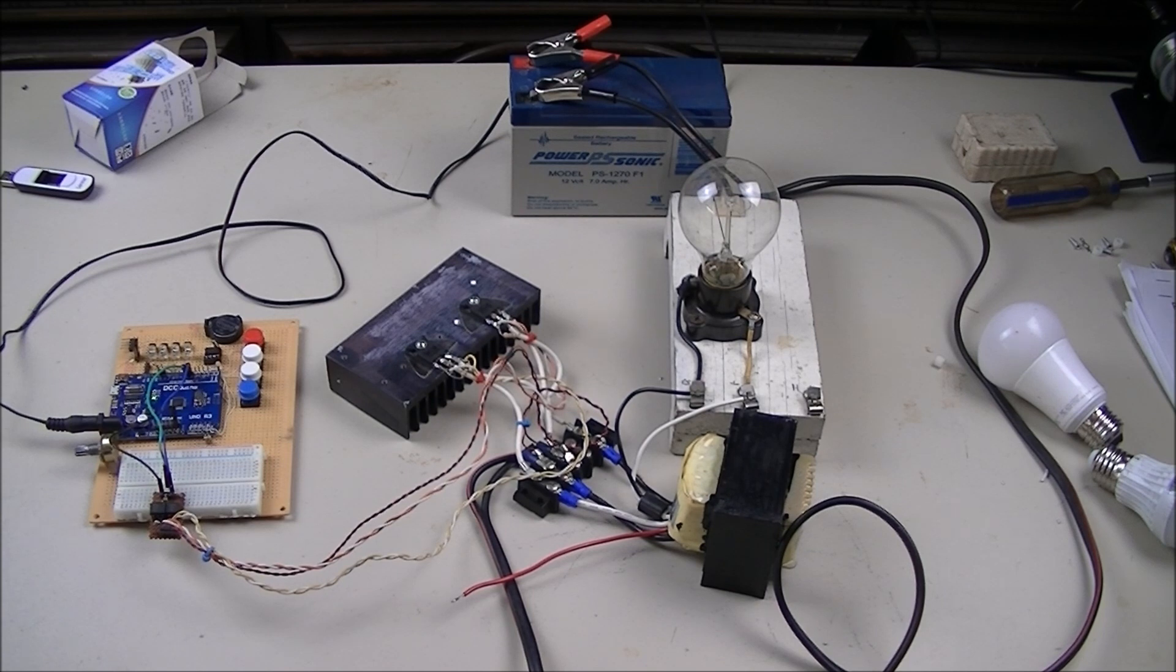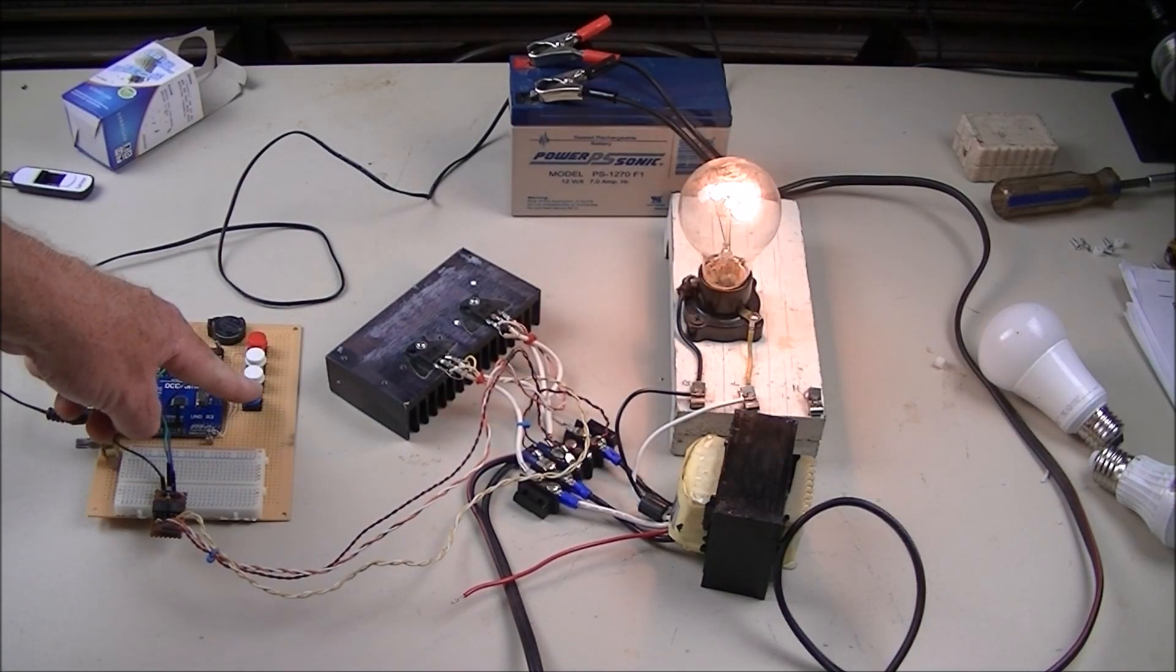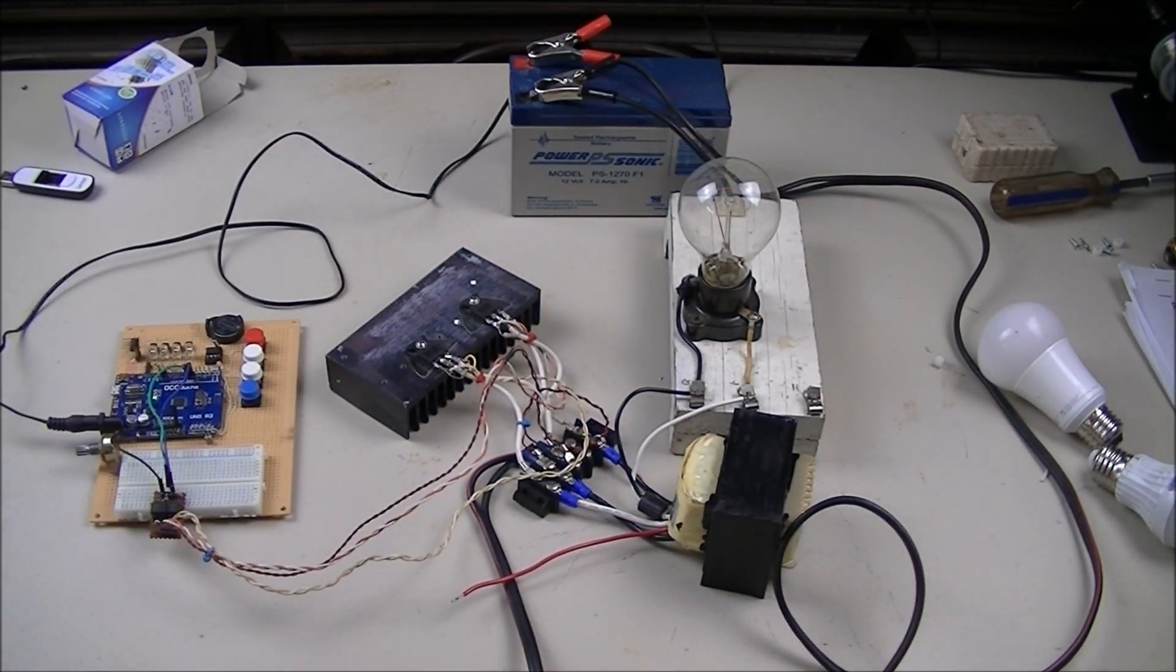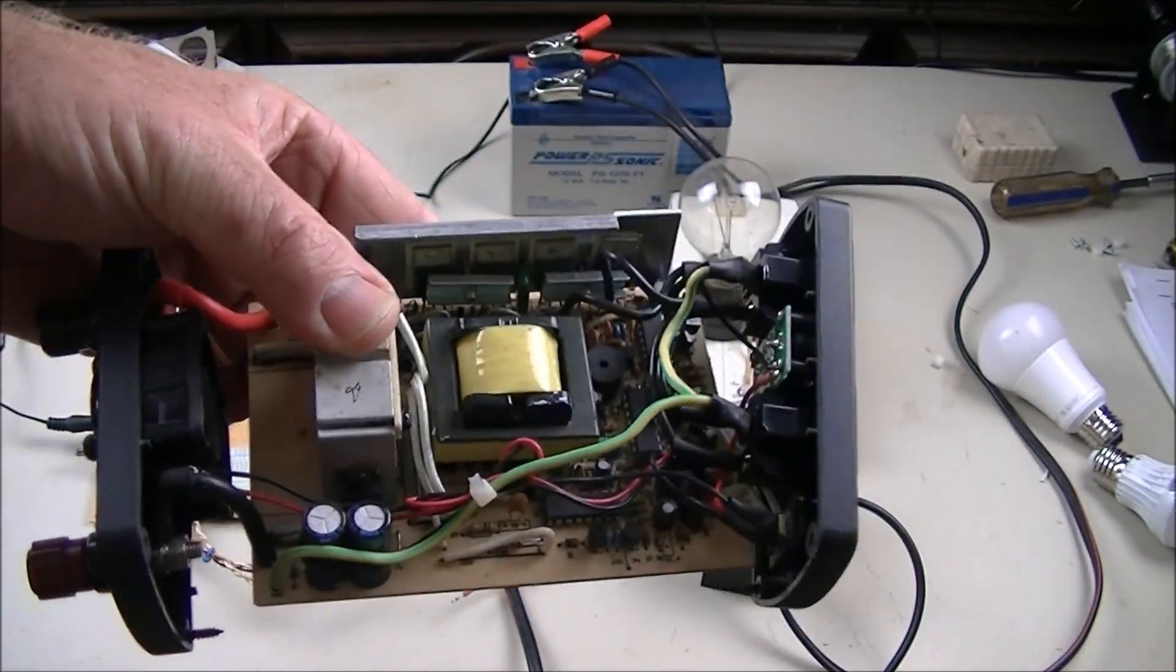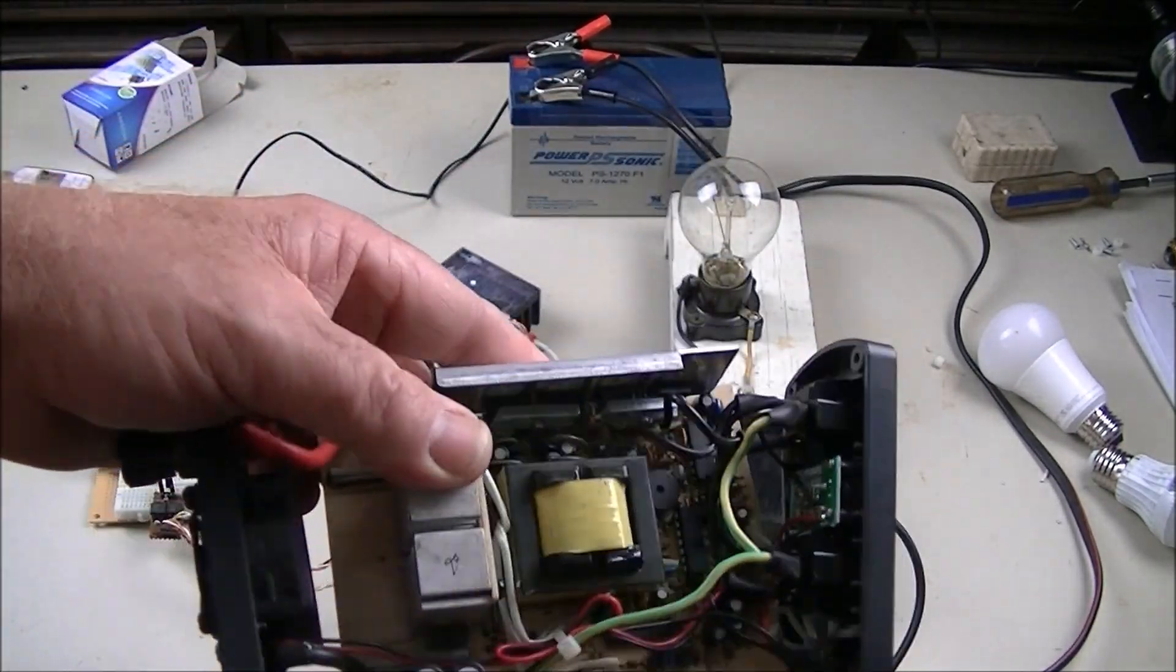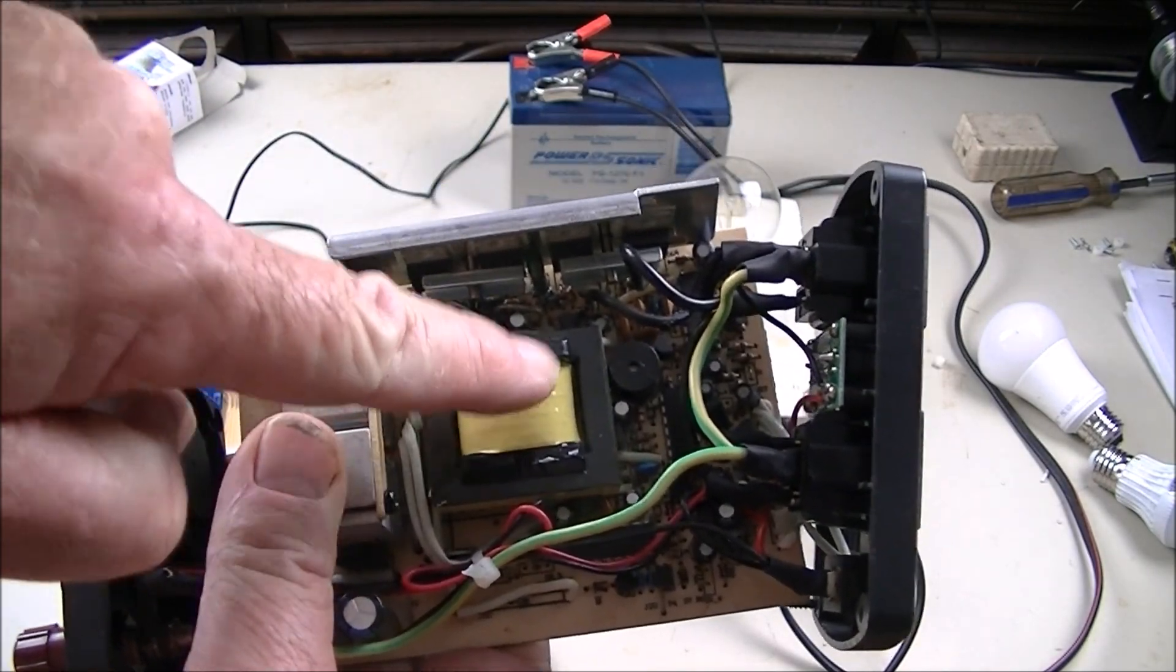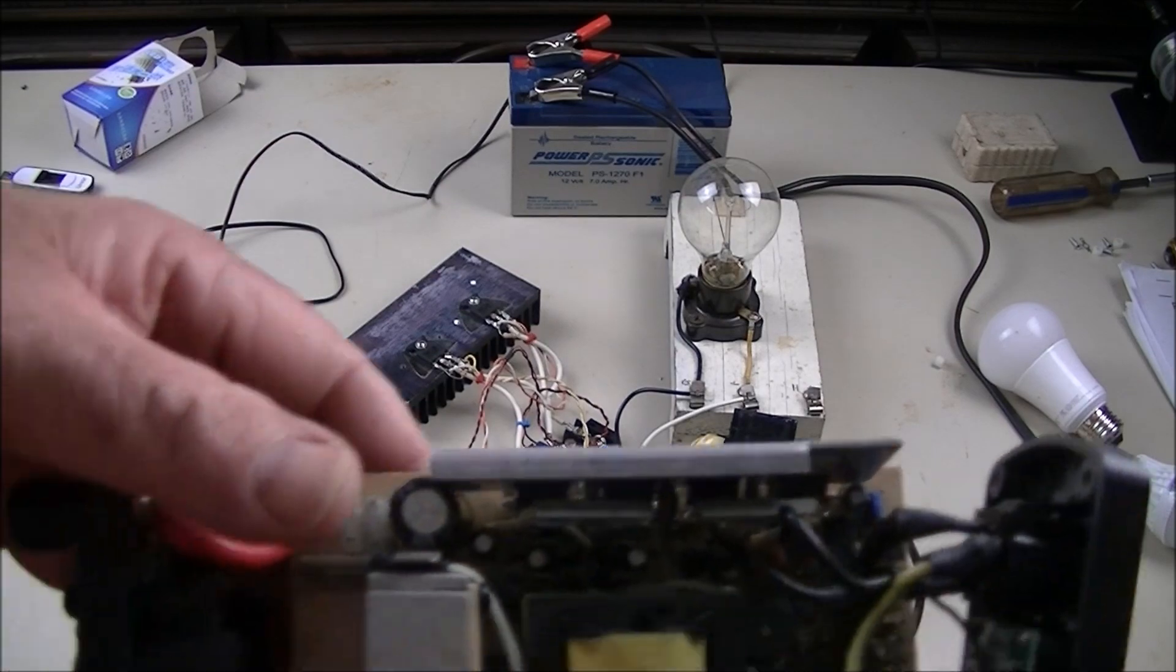I'm running the transformer, instead of a step down, as a step up, and as you saw earlier, it lights up the light bulb. Now, this is again a commercial unit. It's junk, but I saved it to show you a little bit how these actually operate. You notice the transformer here is a lot smaller than that transformer. It's a fraction of the weight.